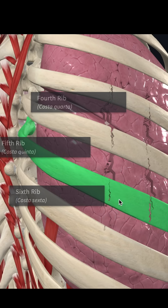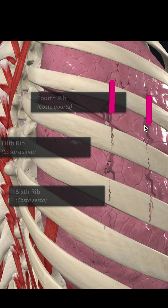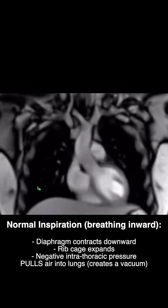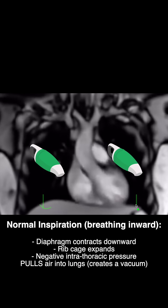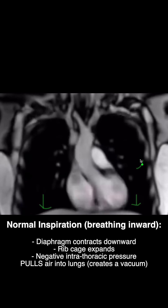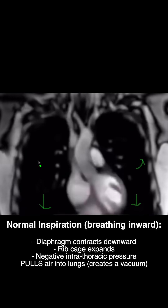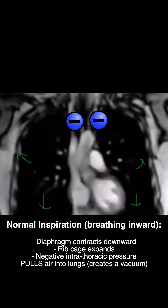The fractured portion of the rib cage, or the flail segment, separates from the rest of the chest wall and moves in a paradoxical motion on respiration. Normally when we breathe in or inspire, our lungs create a vacuum by contracting the diaphragm and moving it downward, causing the rib cage to expand.